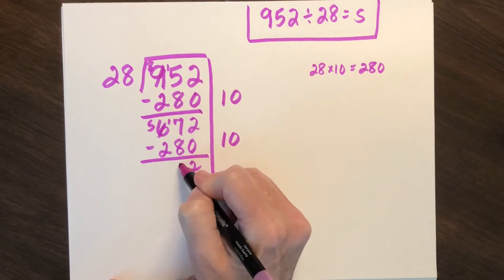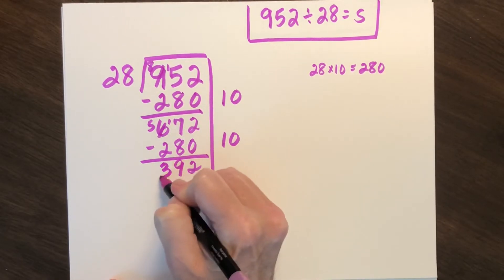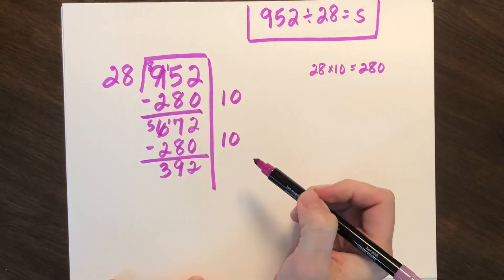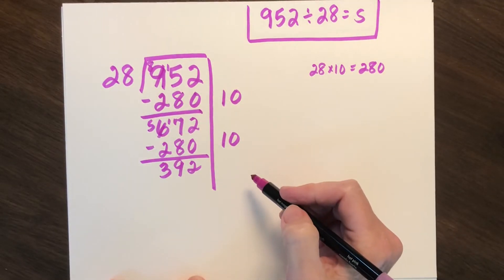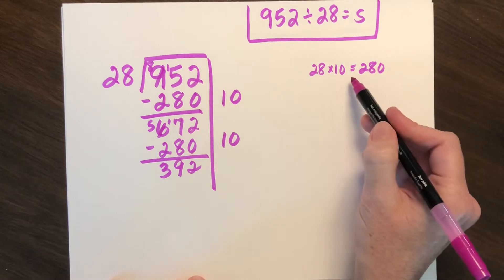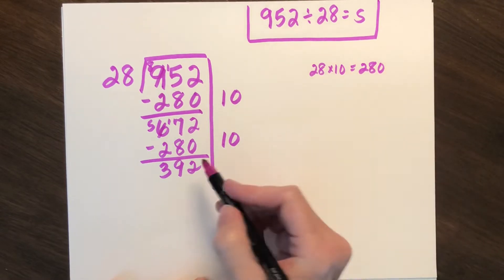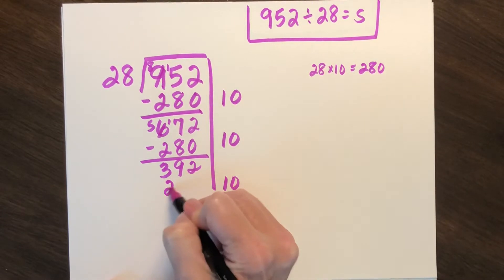This should look very similar to the one-digit divisor, it's just we're now working with two. Can I do another group of 10? I sure can. Great job.